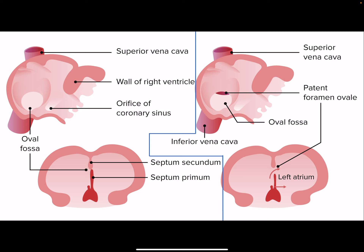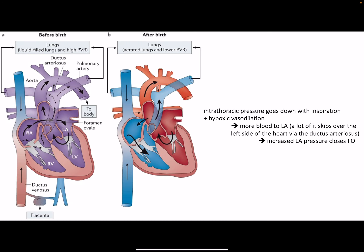PGE2, a prostaglandin, keeps the ductus arteriosus open — so it makes sense that an NSAID would counter that. Normally, the septum secundum fuses with the septum primum to close the gap, but sometimes a little bit remains open, and this is the patent foramen ovale where blood can leak through.